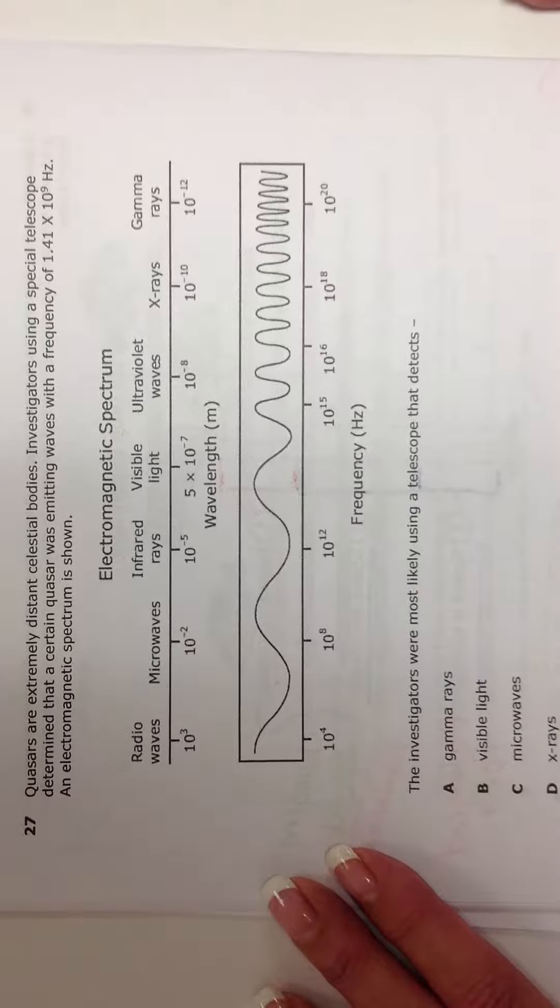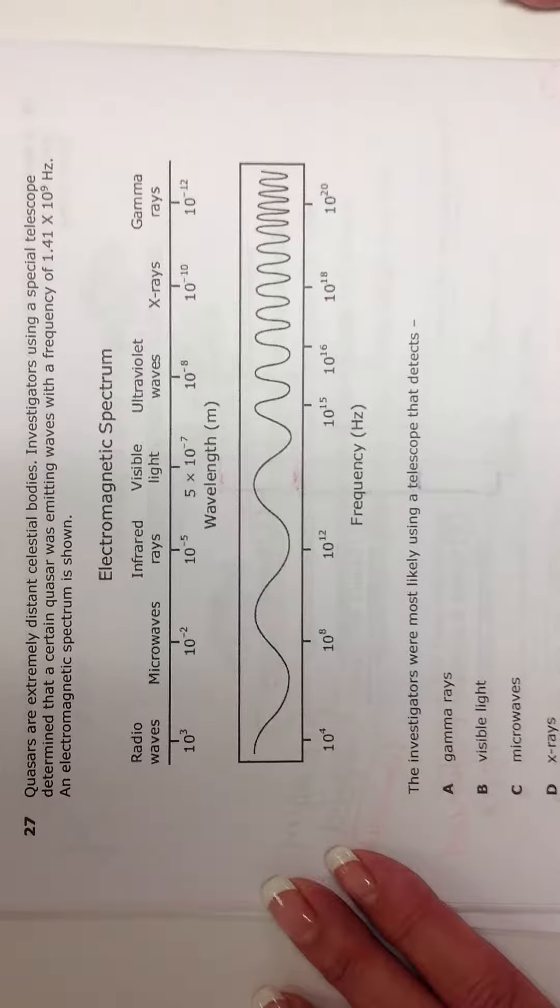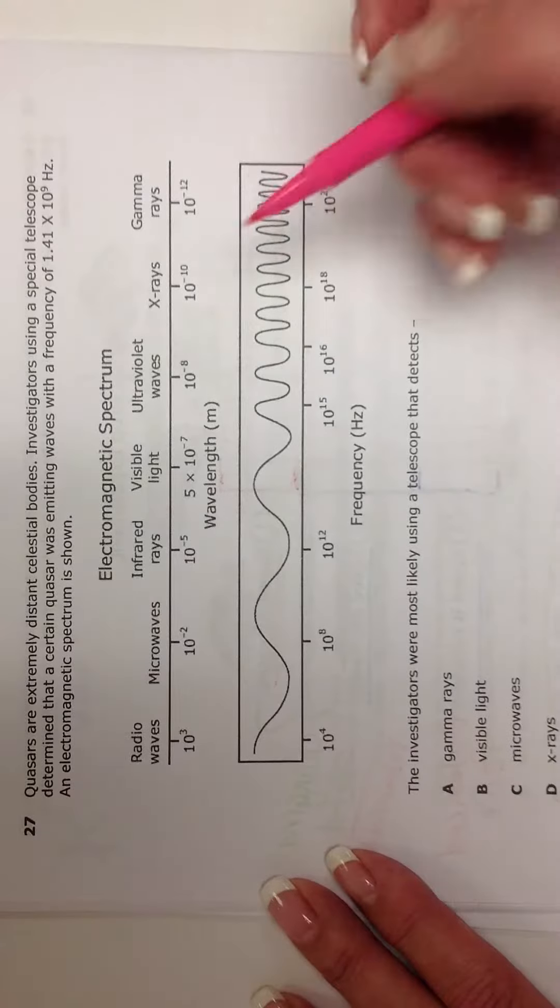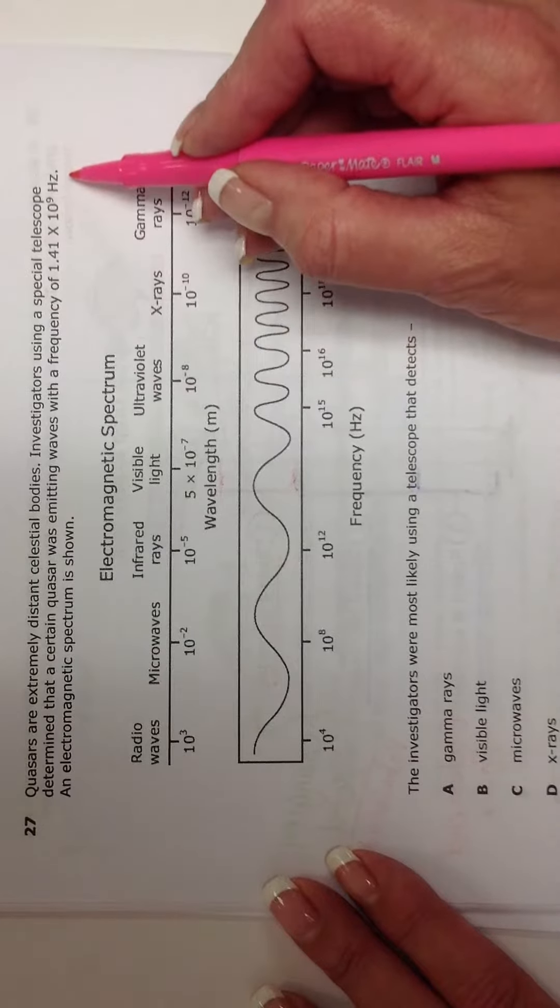All right, 27. Quasars are extremely distant celestial bodies. Investigators using a special telescope determined that a certain quasar was emitting waves with a frequency of 1.41 times 10 to the 9th hertz.